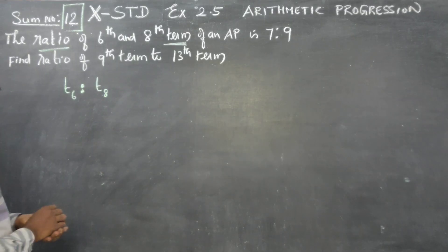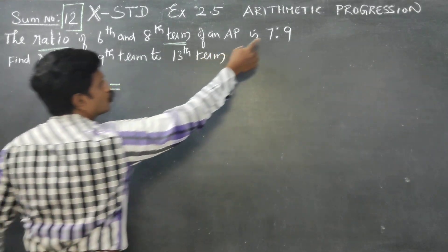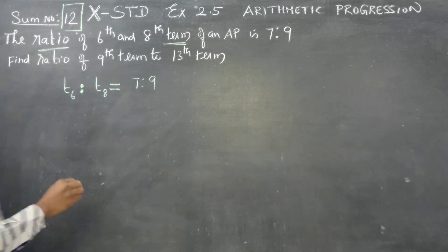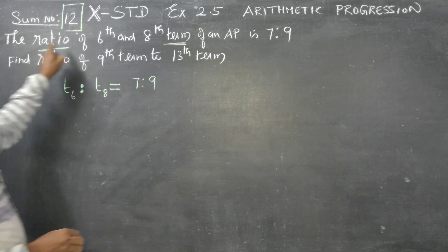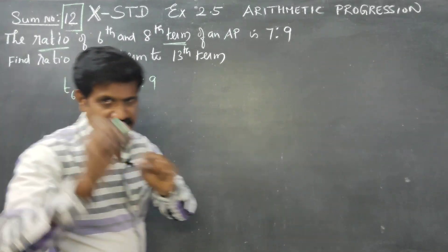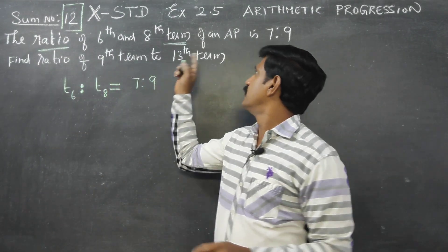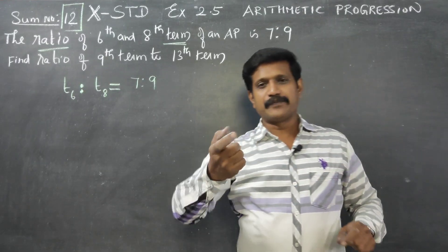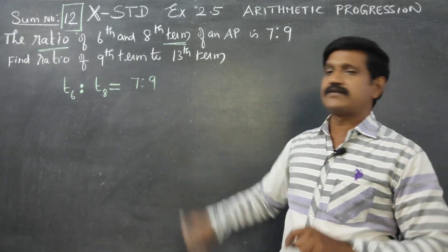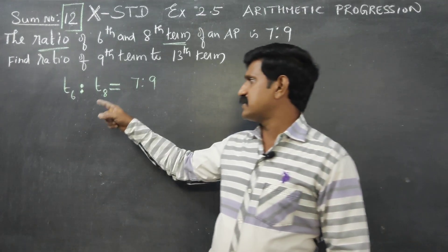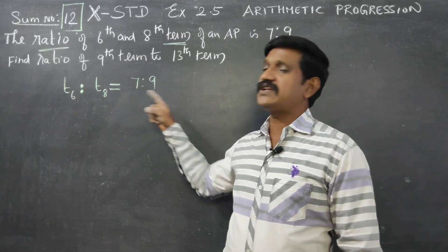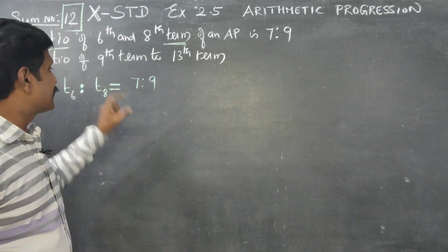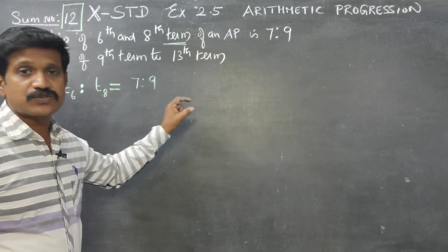This is the first information: the ratio of the 6th and 8th terms is 7 is to 9. That is, T6 is to T8 is equal to 7 is to 9.